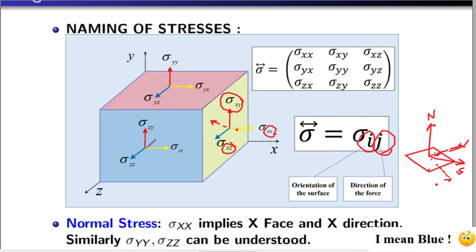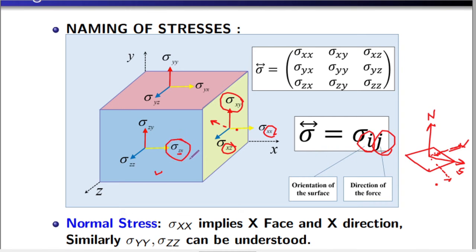Looking at the front face: the dark yellow arrow has the notation sigma zz, meaning it is acting on the z-face and also along the z-direction — this is the normal stress. The other two components on the z-face are sigma zx, meaning acting on the z-face in the x-direction, and sigma zy, meaning acting on the z-face in the y-direction. When the two subscripts are different, you can understand it is a shear stress.